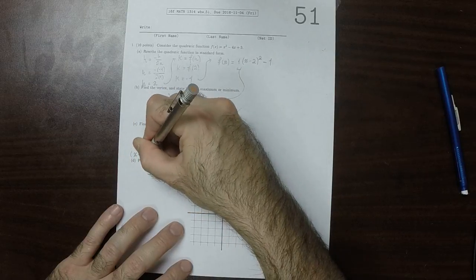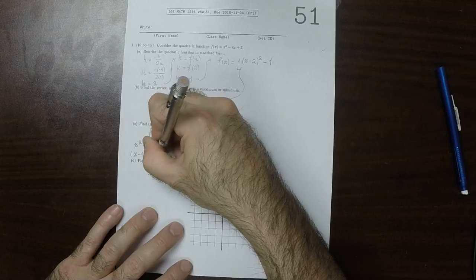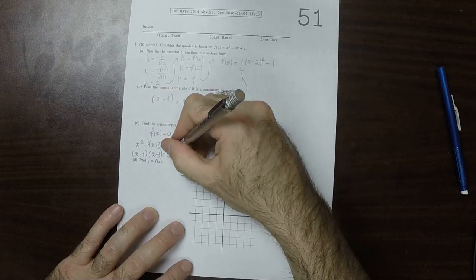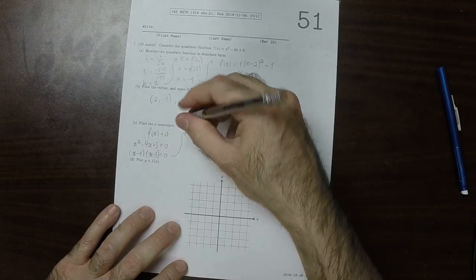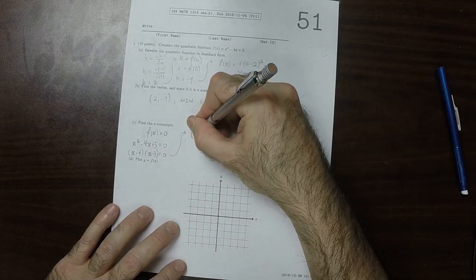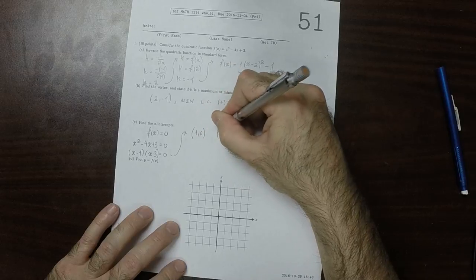x minus 1 times x minus 3 equals 0. That's true when x is 1 or x is 3, so the x-intercepts are 1, 0 and 3, 0.